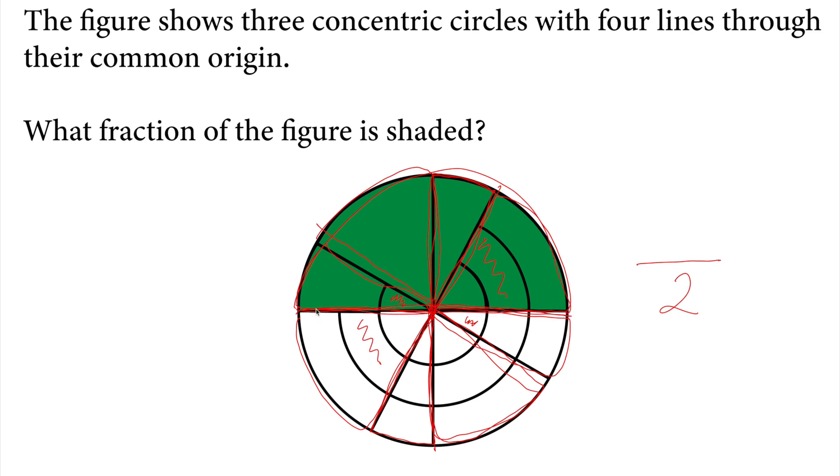They cut the largest circle on the outside into half, two pieces, but the bottom one is white, the top one is green, and the green one is the shaded part as we see here.